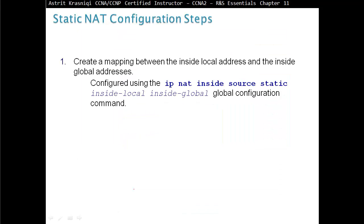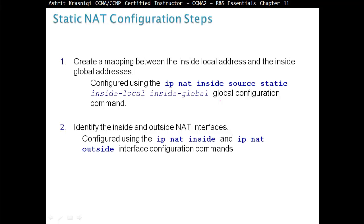The configuration steps: we create a mapping between the inside local address and inside global address using the command 'ip nat inside source static', then the inside local address, then the inside global address that it will be translated to. This is a global configuration command. Then we need to identify the interfaces — which side of the router is inside and which side is outside. The router doesn't know what is inside and what is outside, so we have to tell it which interface is pointing towards the inside network and which is pointing towards the outside network.